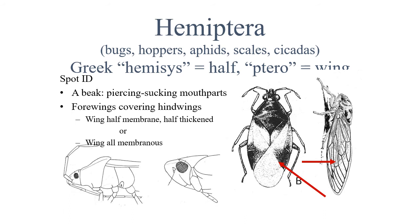The Hemiptera are also known as the true bugs. They include aphids, plant and leaf hoppers, stink bugs, cicadas and others. They have a beak and piercing, sucking mouth parts. Their forewings cover their hind wings, which are usually either half-membranous and half-thickened, or the wing is all-membranous.